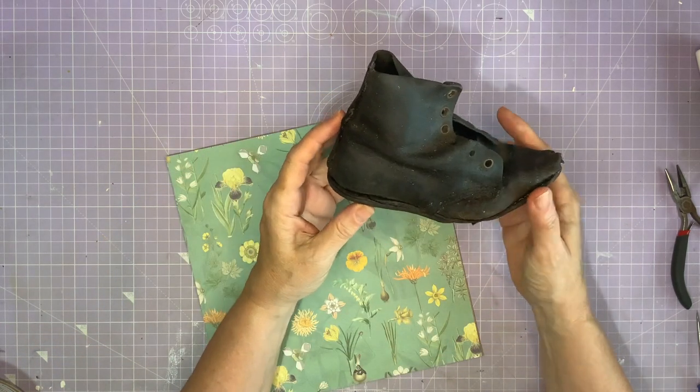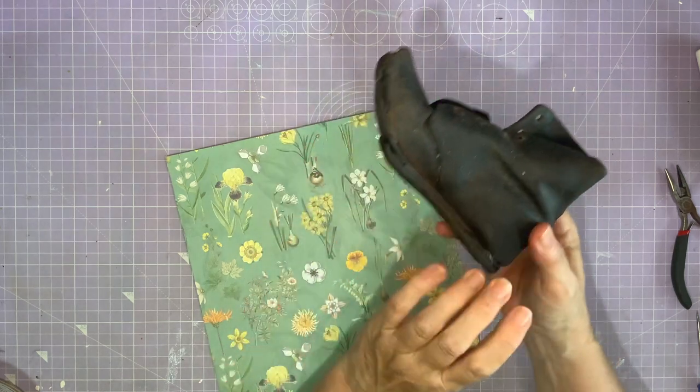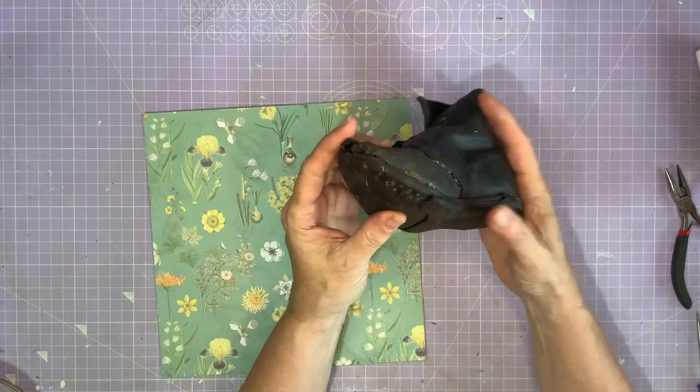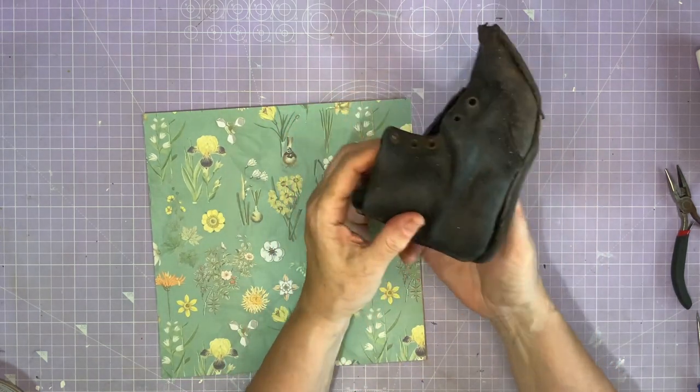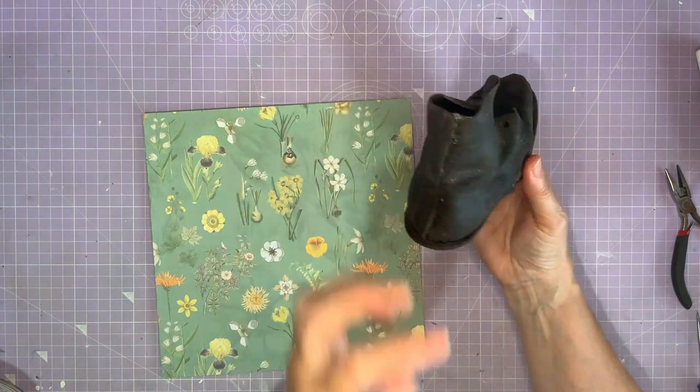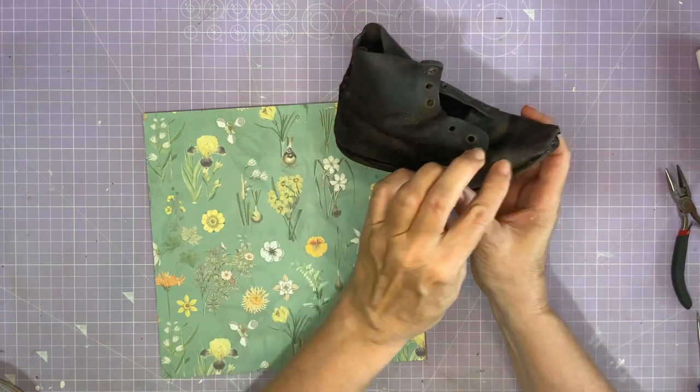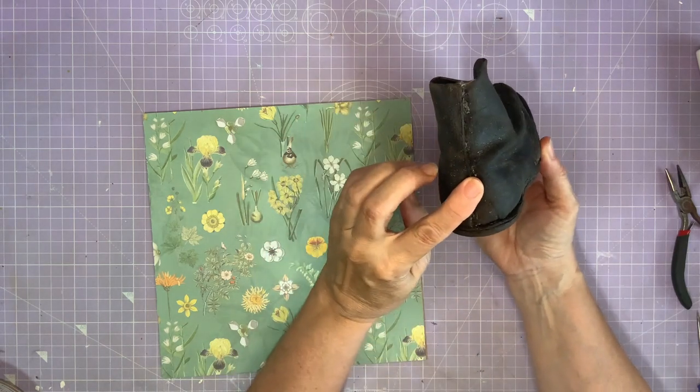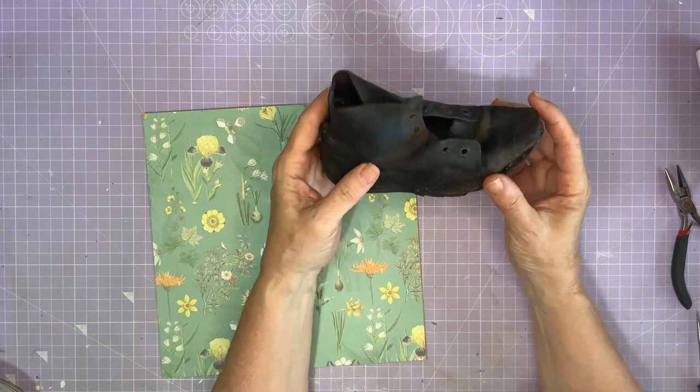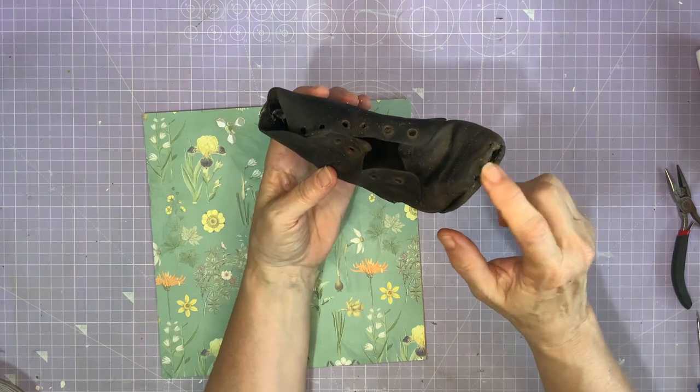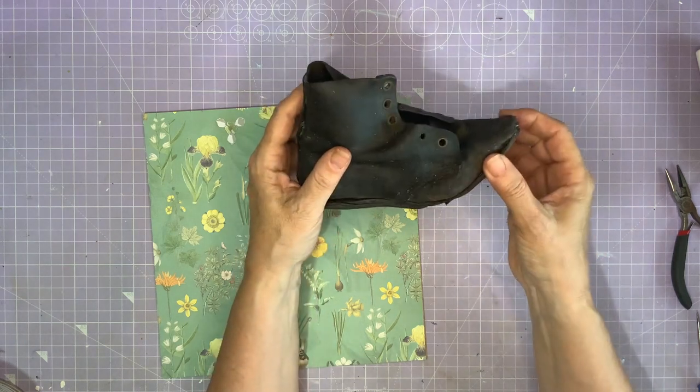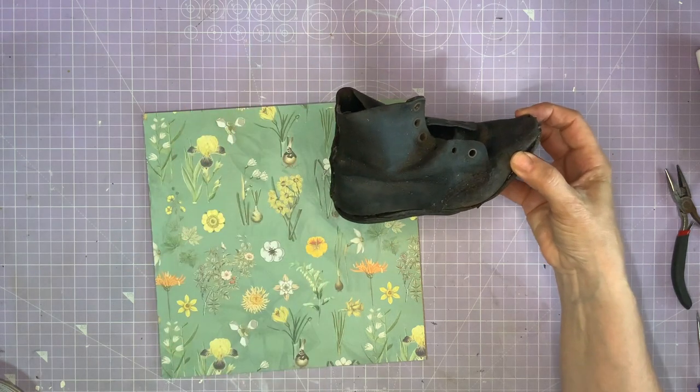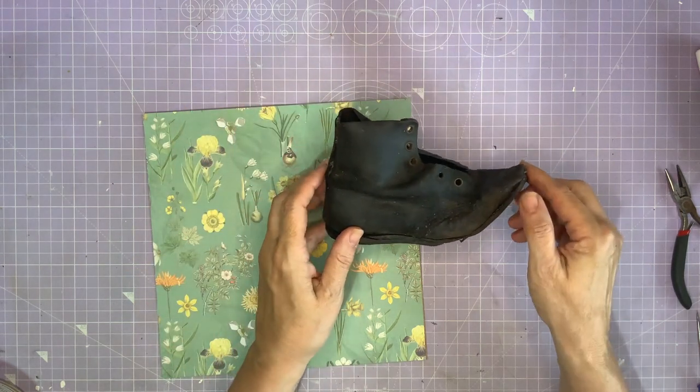Now I'm going to use this Victorian antique boot that I found in the river when I was mudlarking. Now it's in a bit of a bad way, but I don't think that matters. When I first found it all this was open, so I've glued the bottom on and the back together with some hot glue. It's a bit messy but I think I'll get away with it.